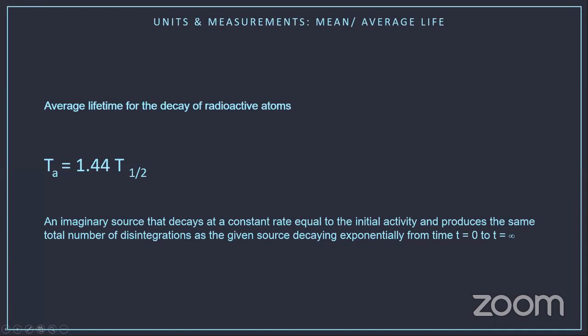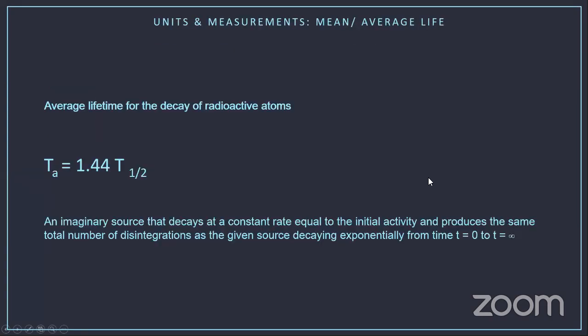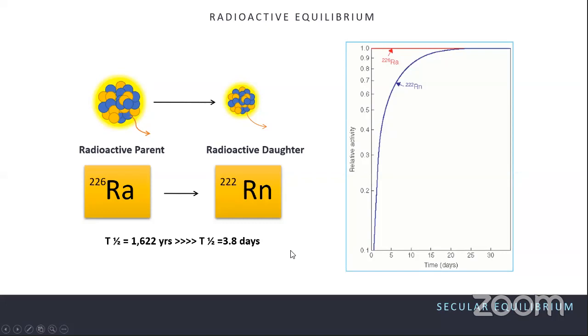The mean or average life (τ) is a useful quantity for certain calculations. It represents the average lifetime of all the radioactive atoms, calculated by summing the total lifespan of all atoms and dividing by the initial number. It is related to the half-life by: τ = 1.44 × T½.